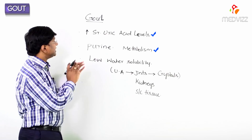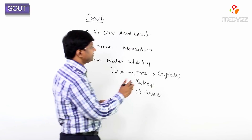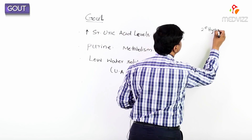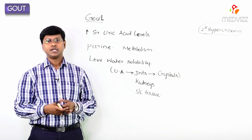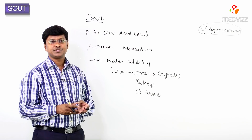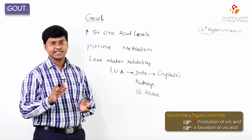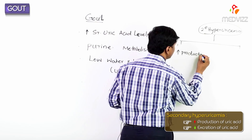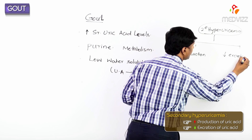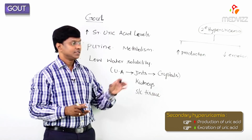The uric acid levels increase because of the disorder of purine metabolism — that is gout or gouty arthritis. We also have another terminology called secondary hyperuricemia, which results due to either excessive production or decreased excretion of uric acid.